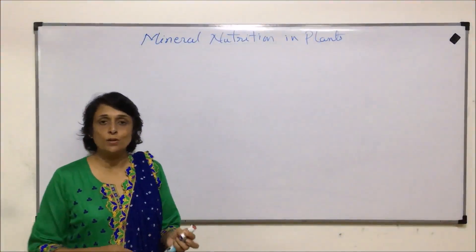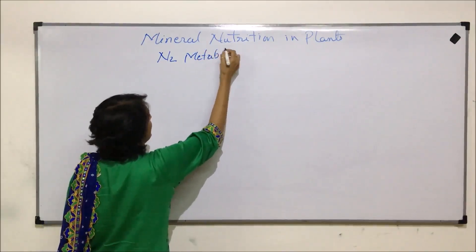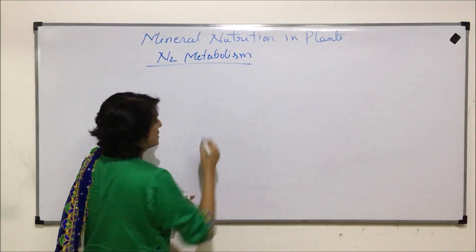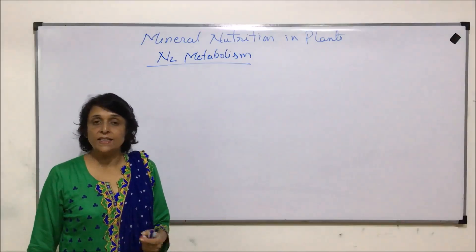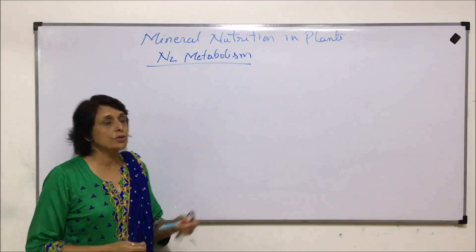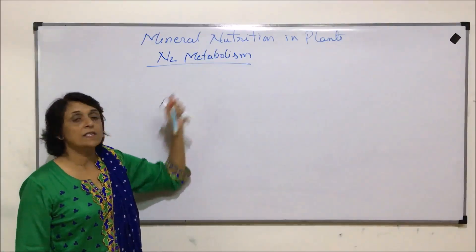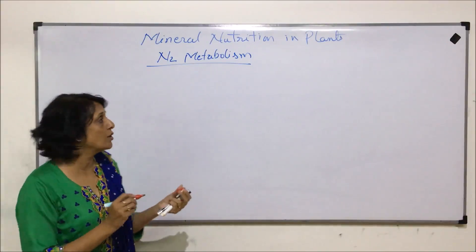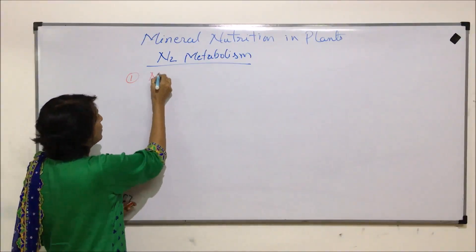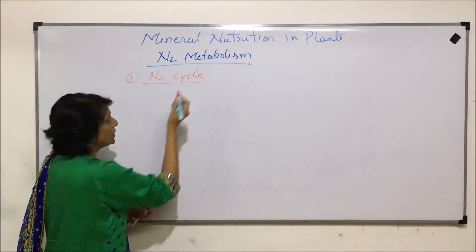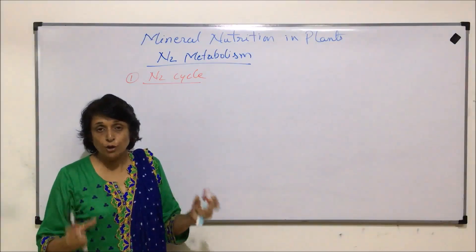We are now going to start the process of nitrogen metabolism. Nitrogen is one of the most important constituents of proteins, DNA, RNA — that is nucleic acids — and ATP molecules. It is absorbed only by plants in certain usable forms, so that is why this metabolism of nitrogen becomes very essential. We will discuss this under various steps, the first being the nitrogen cycle.